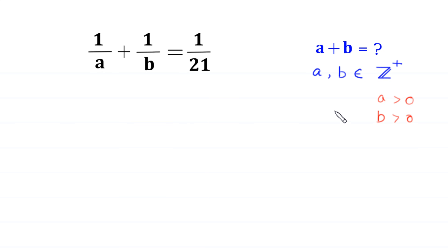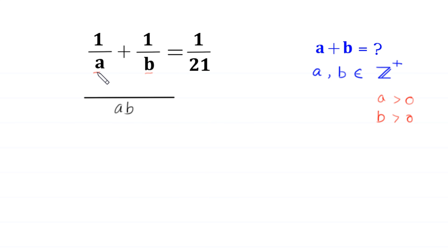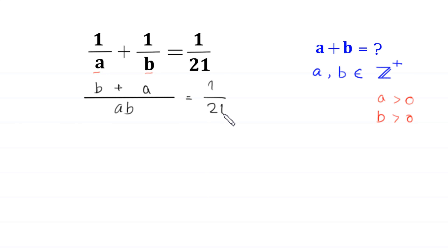First, we take the LCM of a and b. The LCM of a and b is a times b. When we divide ab by a we get b, so we have b plus a over ab, and a times 1 over a is equal to 1 divided by 21.